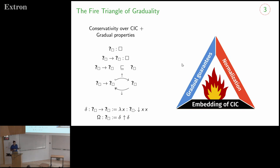And this is what we call the fire triangle of graduality, which states that I cannot have at the same time the gradual guarantees, the embedding of CIC, and normalization. Like having the three of them together makes things explode. Boom.